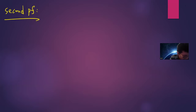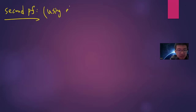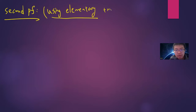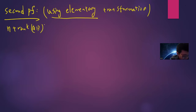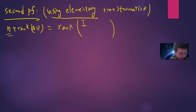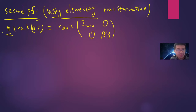Proof two uses elementary transformations — this proof is a bit weird and harder to understand. Notice that n + rank(AB) can be written as the rank of a block matrix. One idea: consider the matrix M = [I_n, 0; 0, B], which has rank n + rank(B).